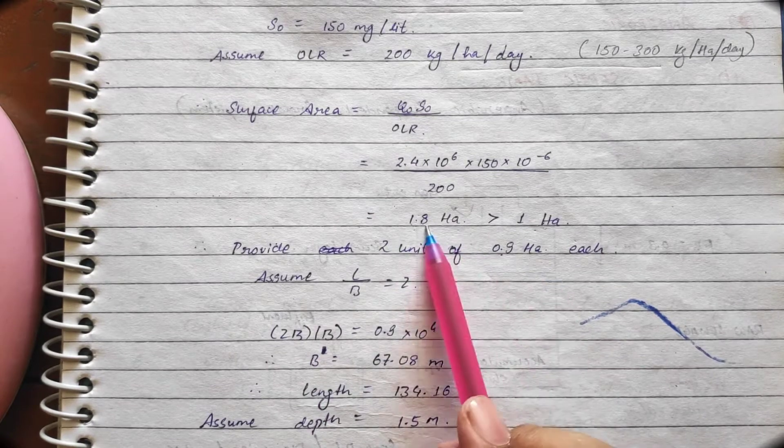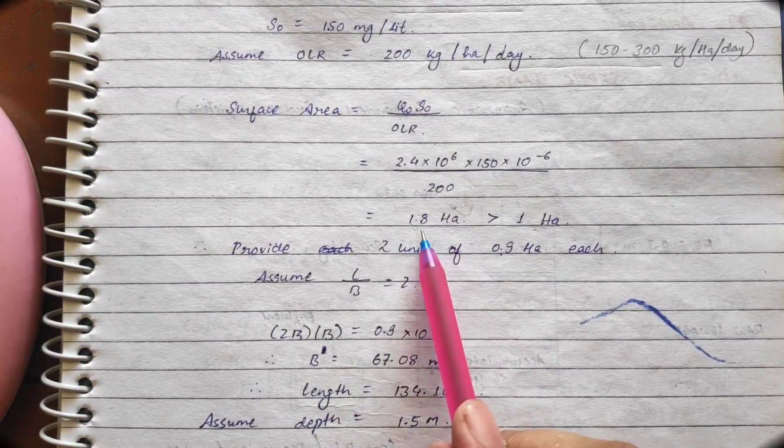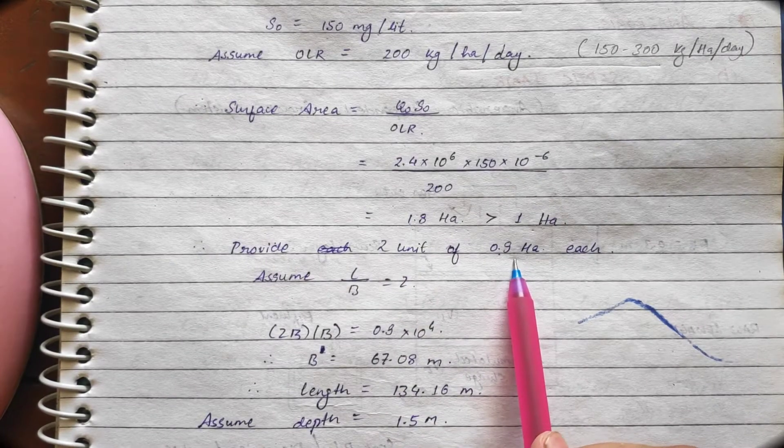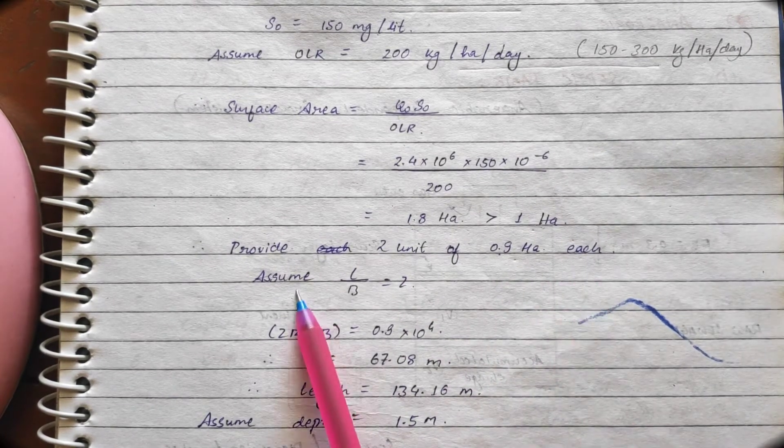So, what we have done? We have divided by things with 2. We are dividing this area by 2. So, we get the each hectare to be 0.9.